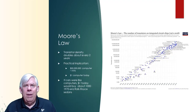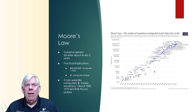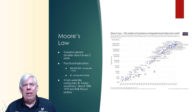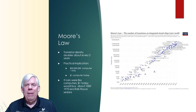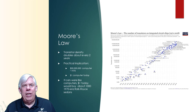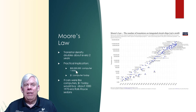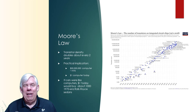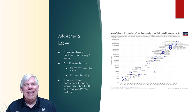Moore's Law was basically an observation made by one of Intel's founders that the density of transistors on each integrated circuit was doubling about every two years, and with that doubling came a rough doubling of capabilities. The practical implications were that computing technology improved to a degree that was essentially unimaginable. For example, a computer that would have cost $60 million in 1970 would cost about a dollar today. Put in even more practical terms, if cars were like computers, today a dollar would buy about a thousand 1970s Rolls Royces.